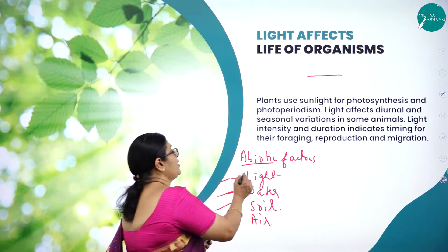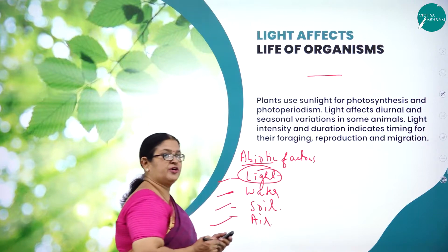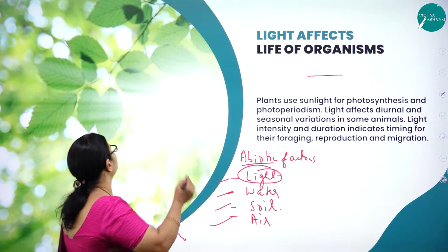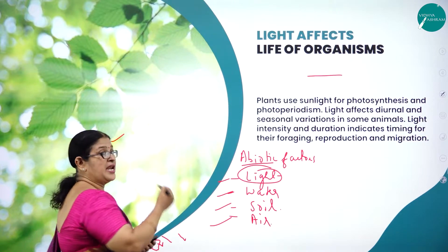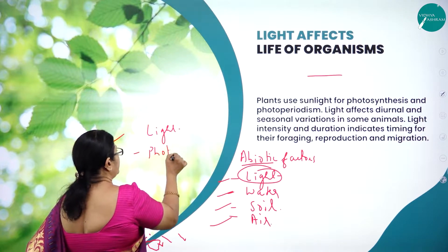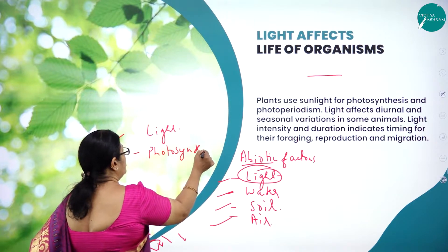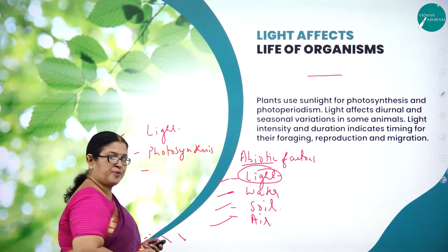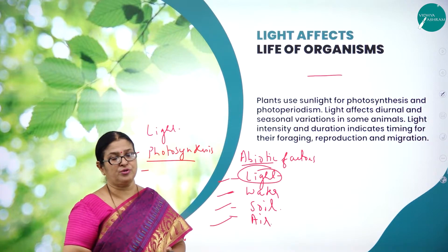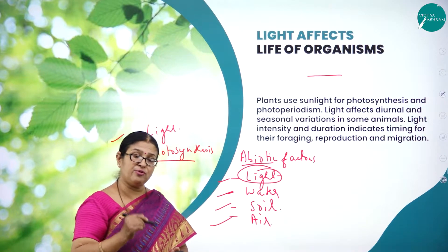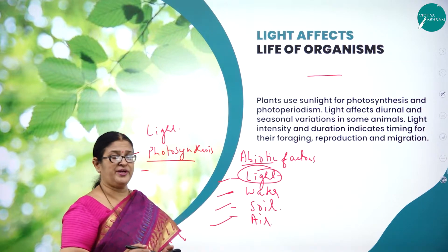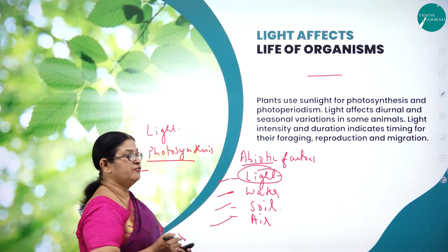How important is light for organisms — for plants as well as animals? Light is very important for plants to carry on the autotrophic process called photosynthesis. Plants are autotrophs; they manufacture their own food, and sunlight is one of the raw materials for the process of photosynthesis.